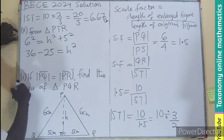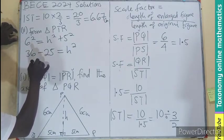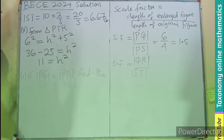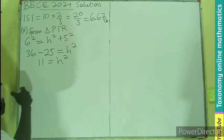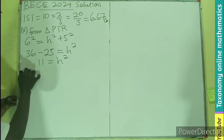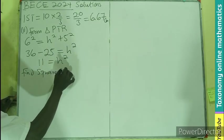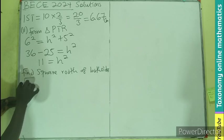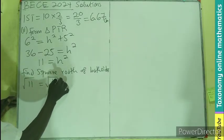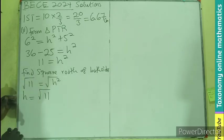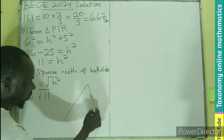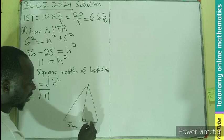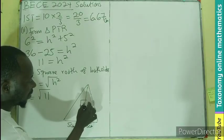We can subtract this and have 11. So 11 equals to H squared. So from here, we are looking for the H. So we find the square root of both sides. Root 11 equals root H squared. That makes H equal to the root of 11. So the height of the triangle we are dealing with is root 11 centimeter.